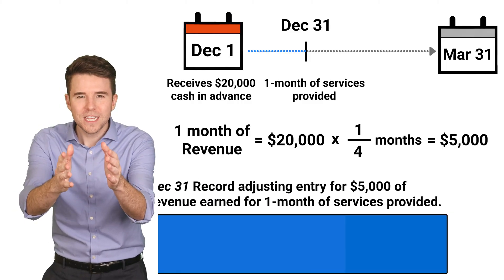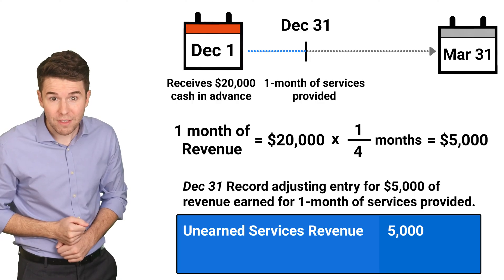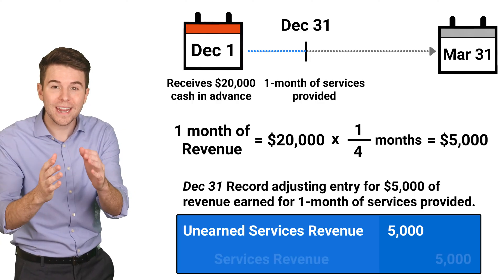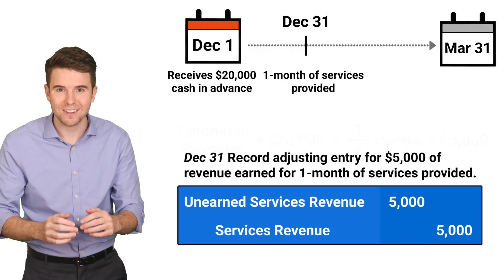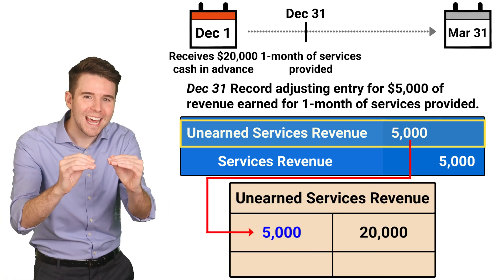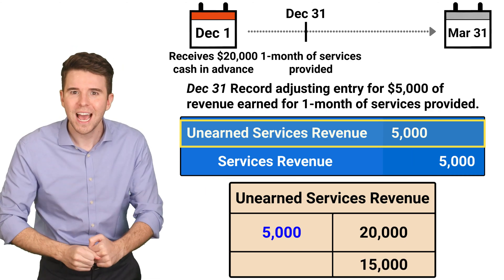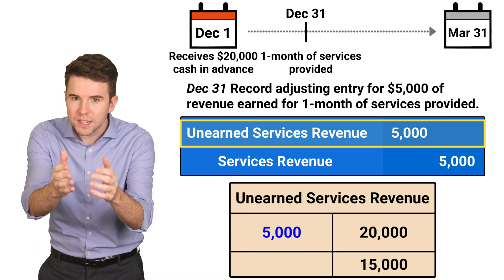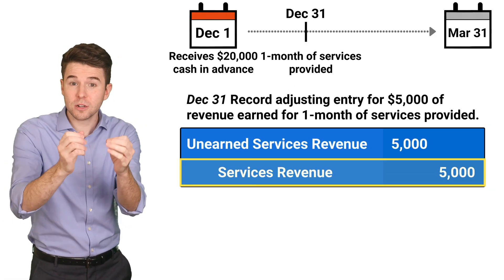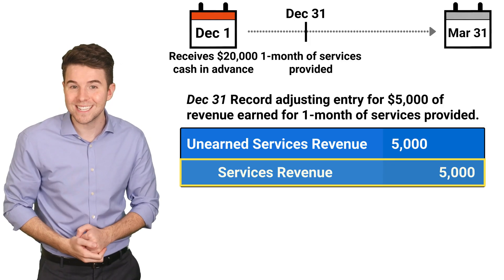To record the adjusting entry, we debit unearned services revenue for $5,000 and credit services revenue for $5,000. The debit to unearned services revenue reduces that liability because we are now only obligated to provide three more months of training services out of the original four months promised. We credit services revenue to increase that account for the revenue we have now earned in December. And that's it — that is how we account for unearned or deferred revenues.